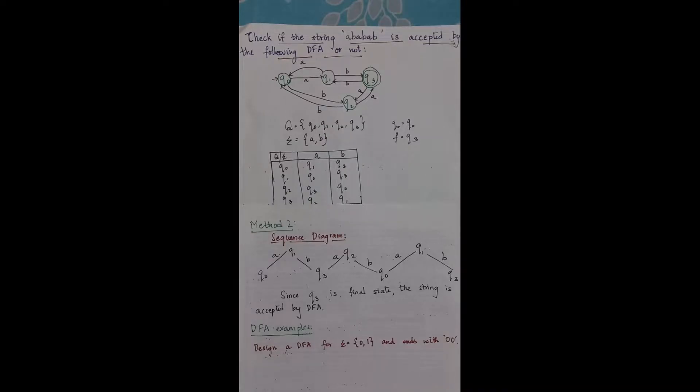The second method is sequence diagram. For sequence diagram, I will consider each alphabet. So I start with q0.